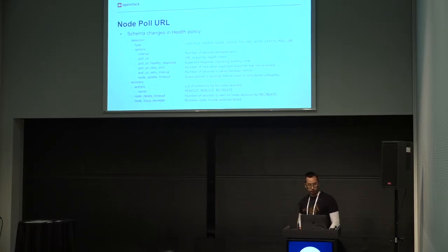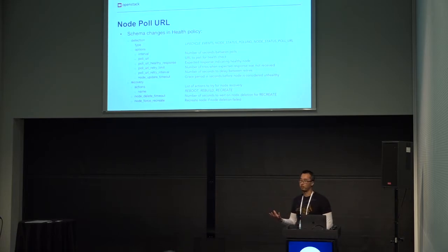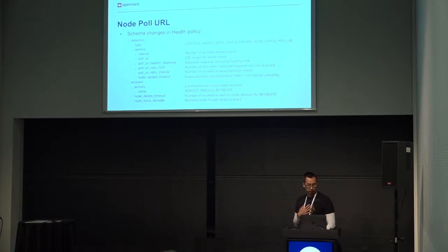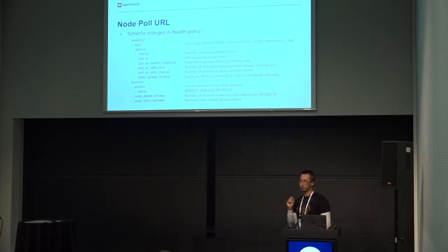For the node pull URL, we made a few changes to the health policy. We already had the lifecycle events and node status polling — which actively queries Nova for the status of the node — and we added a new mode: the node status pull URL. Along with that new type, we have a few options: the interval for the polls, the pull URL endpoint that the health engine will query, and the expected healthy response, where the health engine matches the response from the URL against a string to determine if the node is healthy or not.